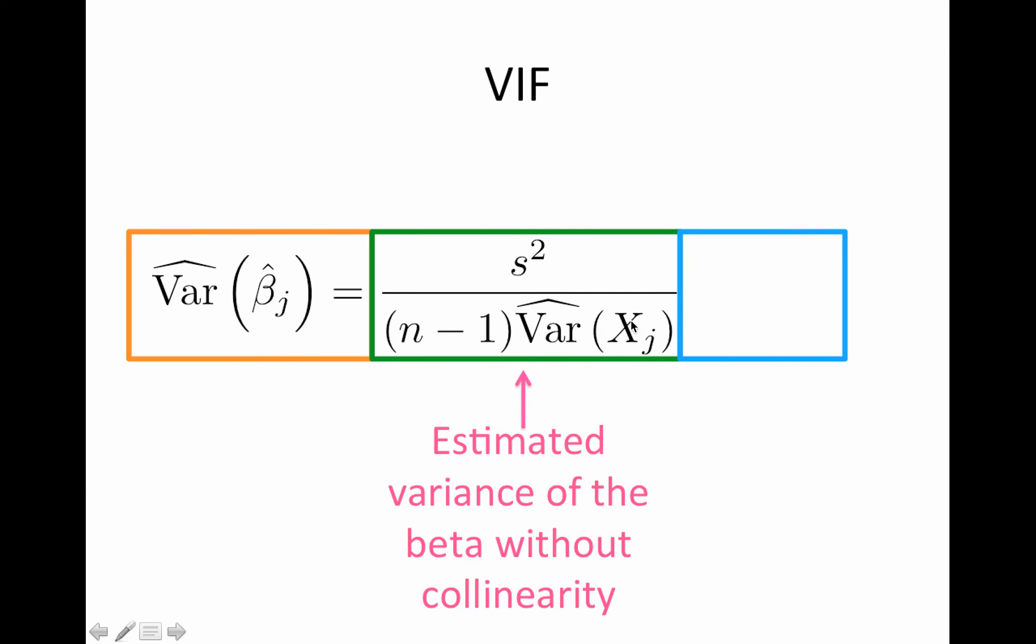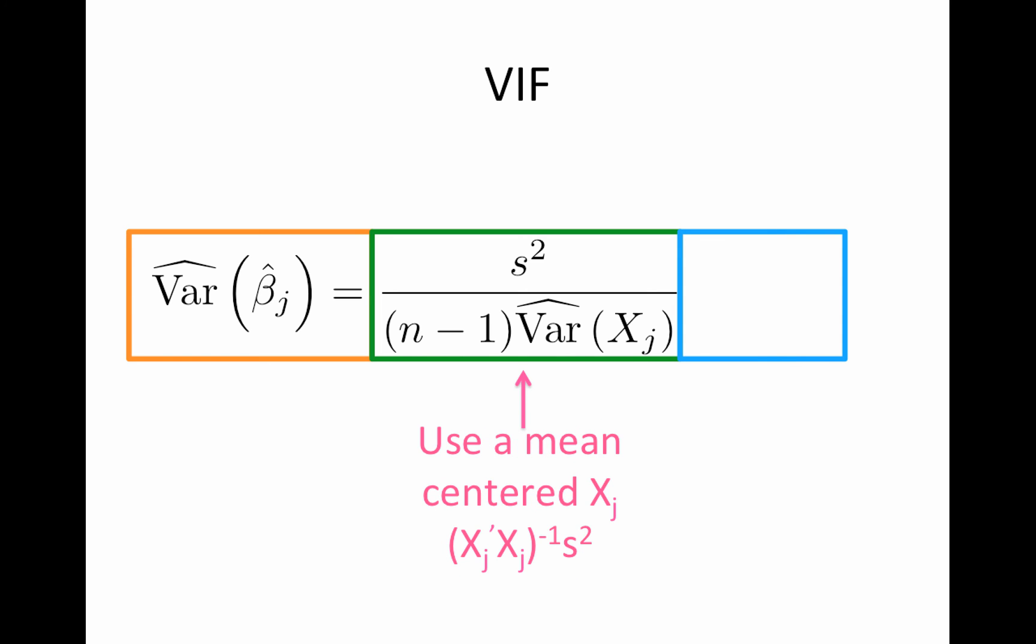This part here, this might look really confusing. All this is the estimated variance of the beta without collinearity. So if you just modeled xj, so j is the regressor that we're interested in computing the collinearity in this case for. So if you modeled xj by itself, this is what its variance would look like. So it's the residual variance and then the variance of the regressor and this n minus one. You can work it out on your own or just take my word for it. There is one caveat. This is assuming xj was mean centered. Then if xj is mean centered, you can do this matrix multiplication, xj transpose xj inverse times s squared. That is the equation that we've seen many times for the estimated variance of a beta hat. This is the estimated variance of a beta hat if xj is all by itself in the model. You can do this, multiply it out by hand and you'll get this.